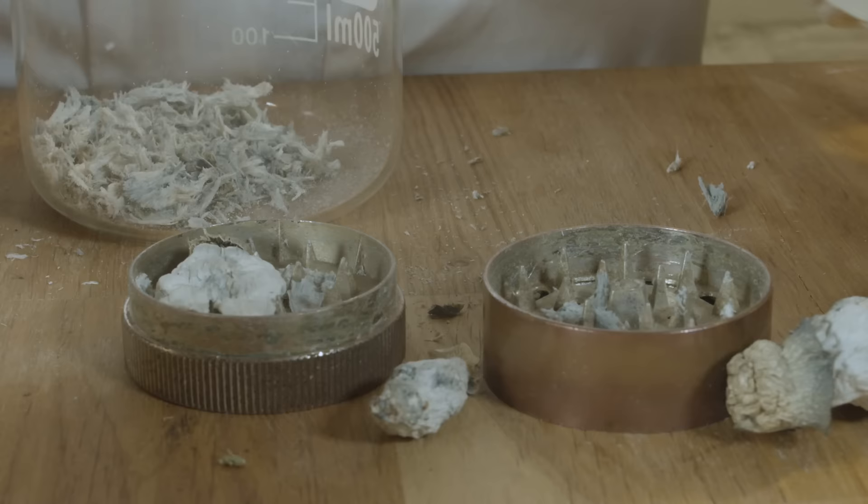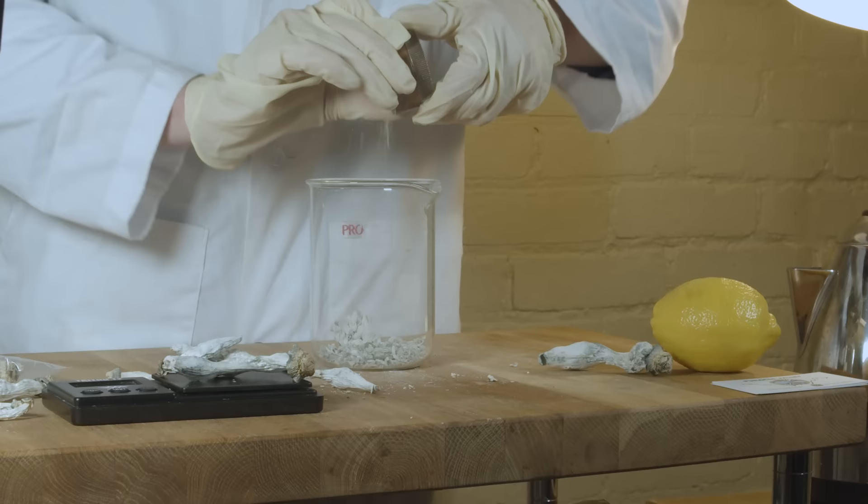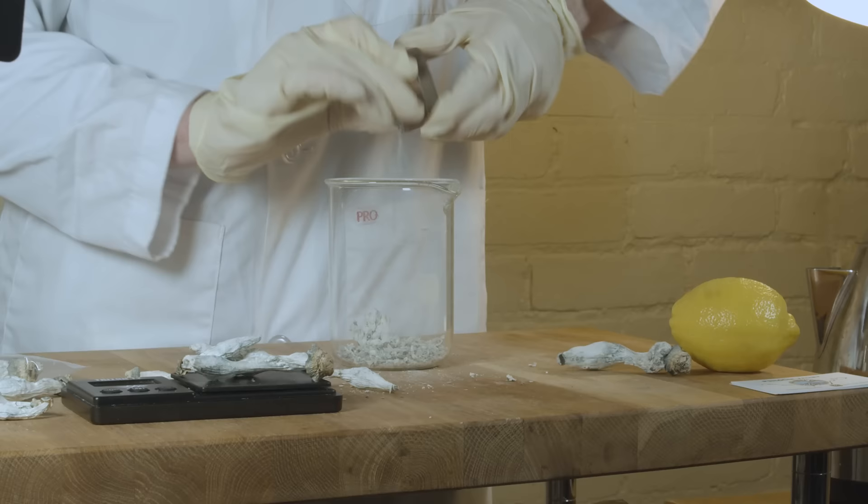Tip number one is to break up your mushrooms. The amount and strain are up to you. I'm breaking these up into chunks that are about two to four millimeters. I use this cheap dollar store grinder and it works perfectly. You don't want it too fine so that it's hard to filter later.